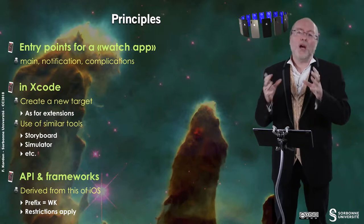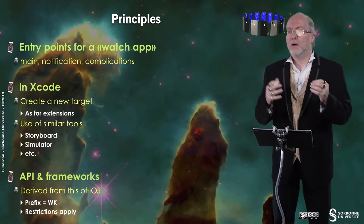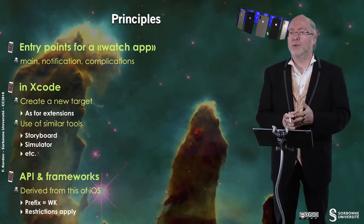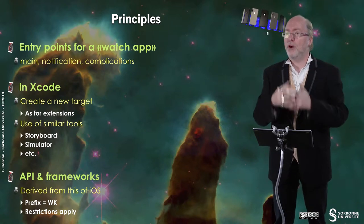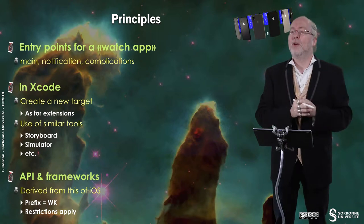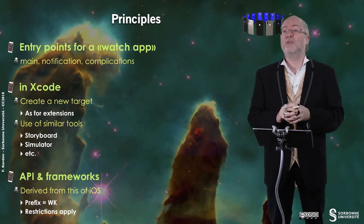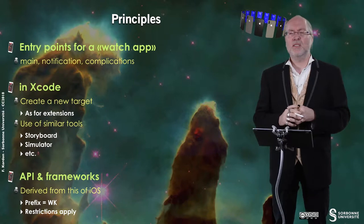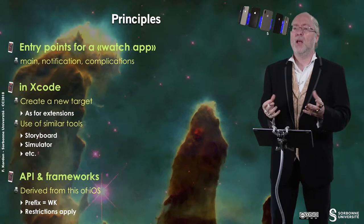There are some important principles. The first is that you have several entry points, and your watch app may implement one or more. You must at least implement the main entry point, which is typically an application you can launch from your watch. But you can also have notification-based entry points — when your main application supports user notifications, push or not, and wants to forward them to your watch. And since watchOS 4, you can also define complications. Complications are these add-ons you can put on your watch screen — things like the current date, sunset time, and so on. Now any developer can propose their own complications.